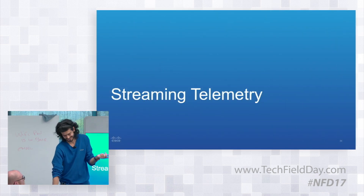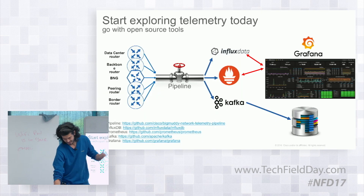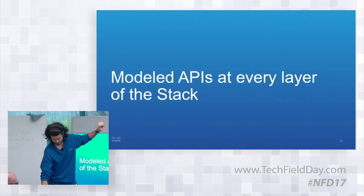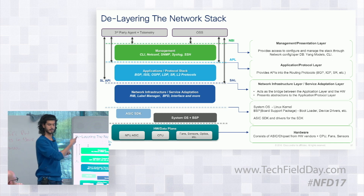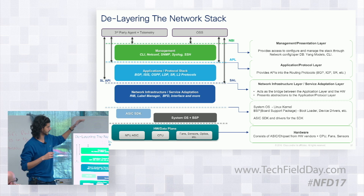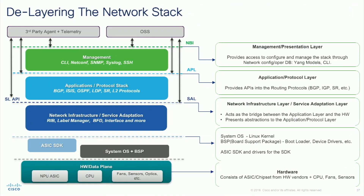gRPC also supports CLI if you want, but we recommend using models. Moving to the service layer API — this is what the network stack looks like. You have the management layer: CLI, SNMP, models, syslog, SSH at the top. Below that is the protocol stack and network infrastructure layer — the RIB, label switch database — where protocols communicate, and those in turn communicate with the hardware. The basic goal is to give you a model-driven API at every layer of the stack. We already have YANG models for everything you can do in CLI — both for monitoring and configuration — available over netconf and gRPC, with YDK on top if you want full abstraction.